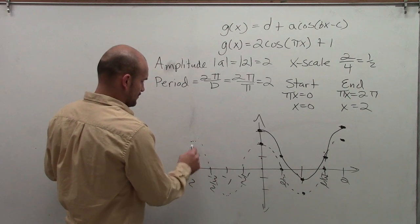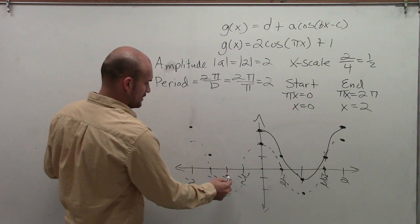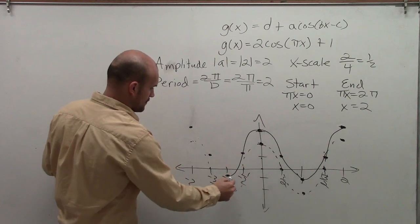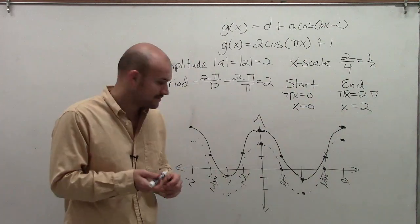And then I can also continue this down in the negative direction. So therefore, that point would be up 1. This is going to go up 1. This goes up 1. This would go up 1. And there you go.